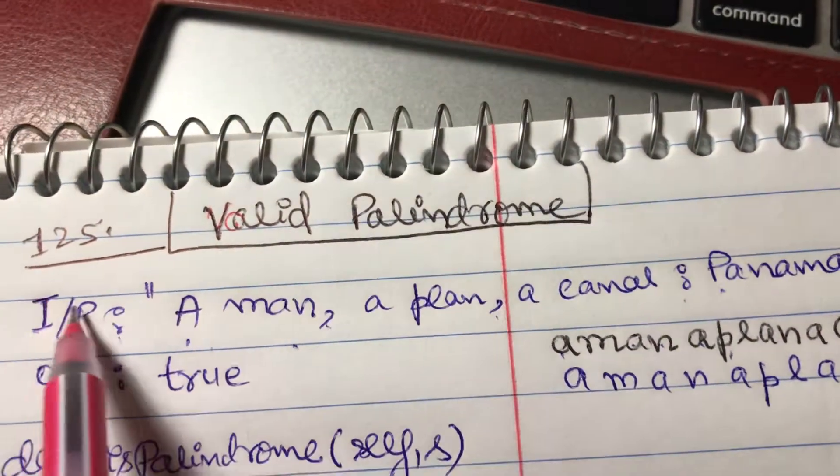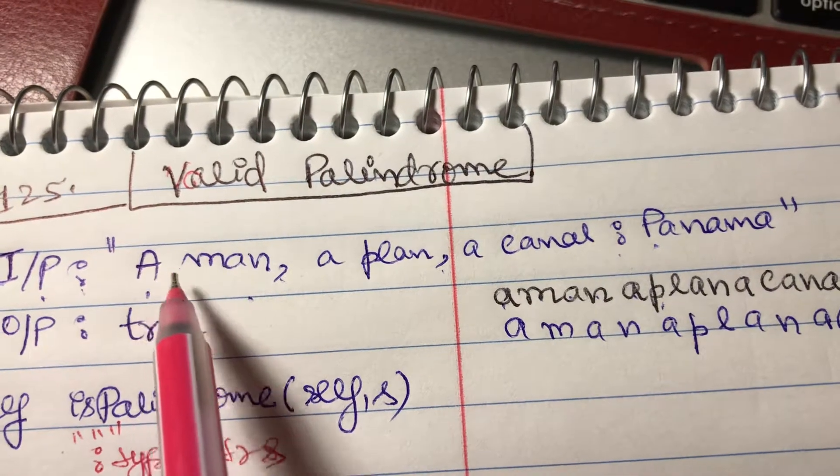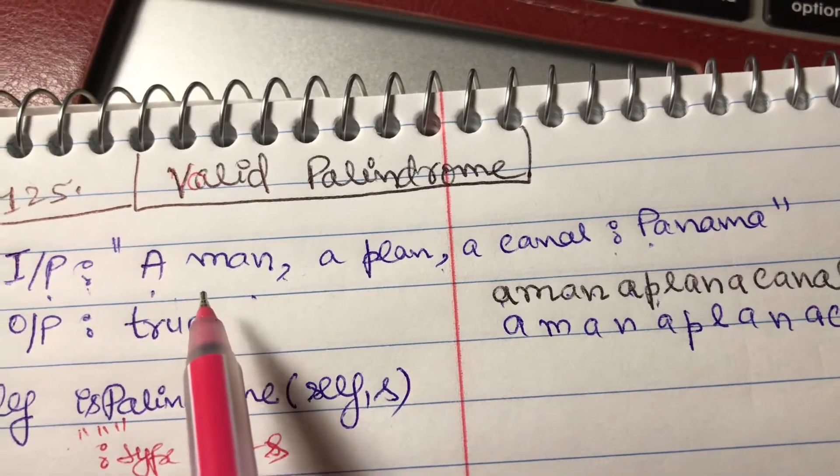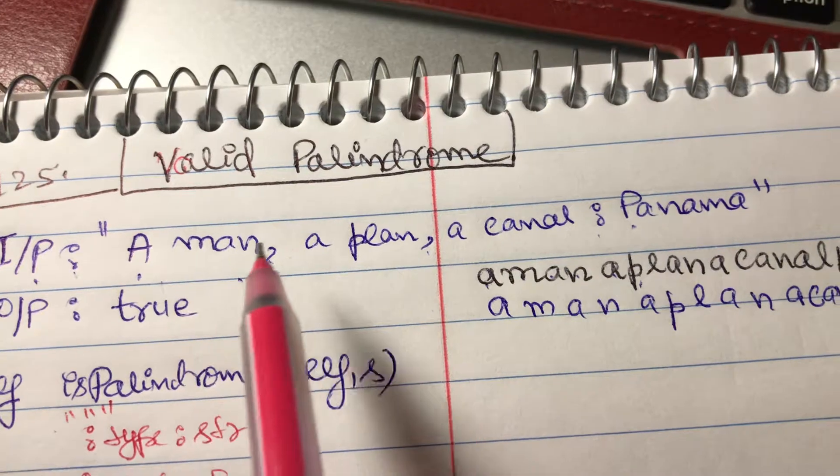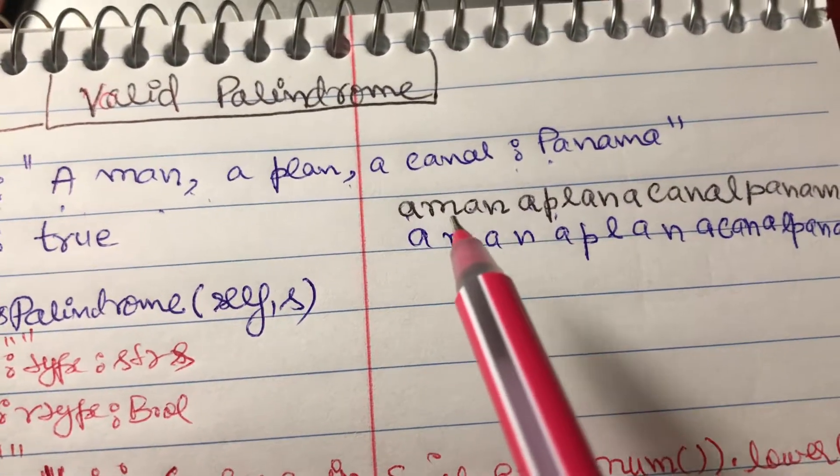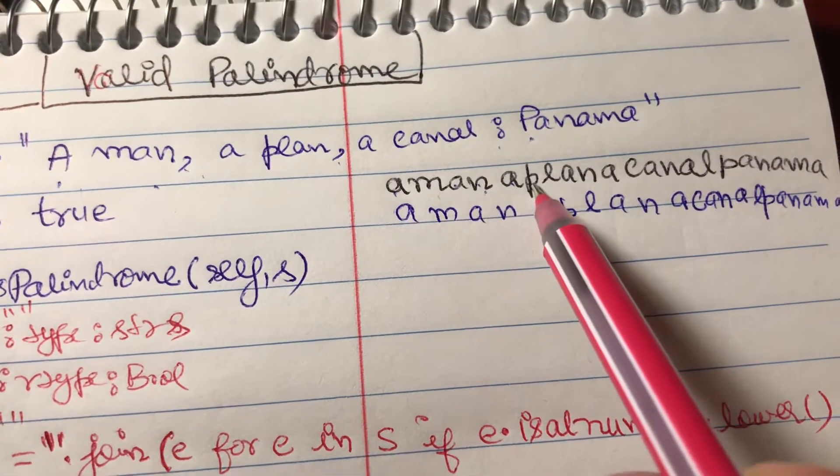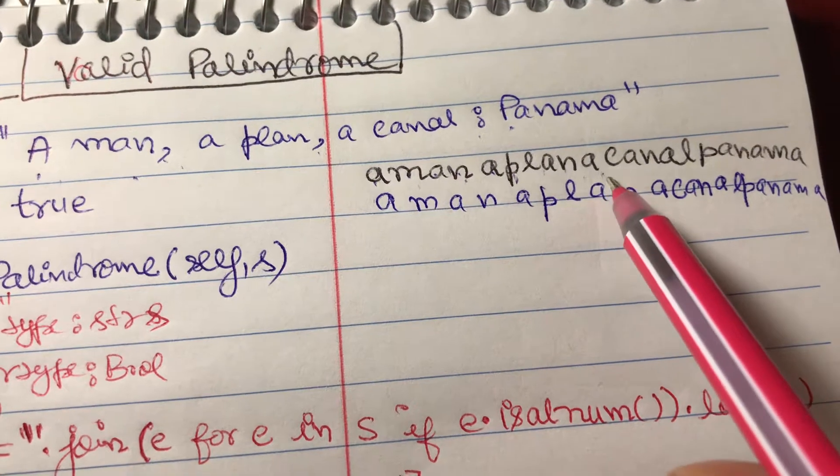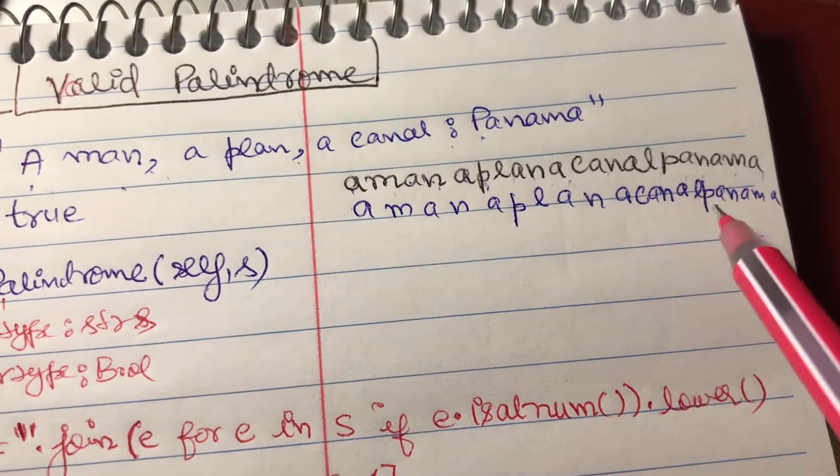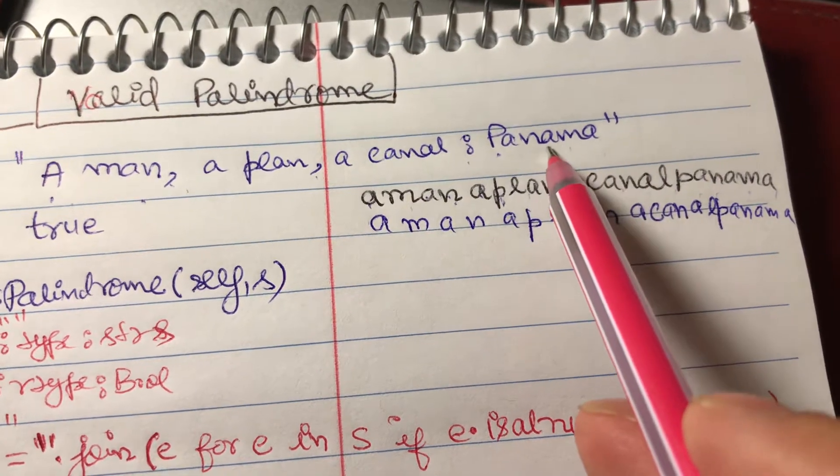So let's write this input string by converting all capital into lowercase letters and by ignoring all the special characters and including only alphanumeric characters. So we will have 'a man' then 'a plan' and then 'a canal' and then 'Panama'. Let's write the string backwards.